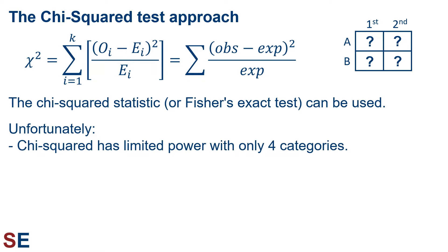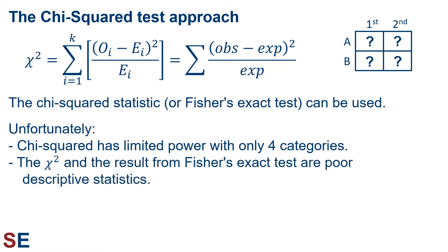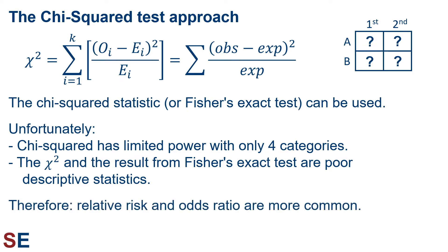First, the chi-squared has limited power with only four categories. Such tests have only one degree of freedom, and unless the sample sizes are very large, it's hard to detect non-random relationships. Second, the chi-squared value and the result from Fisher's exact test are poor descriptive statistics. They show if something's non-random, but give no sense of what the non-random pattern or process may be. For these reasons, the relative risk and odds ratio approaches are much more common.